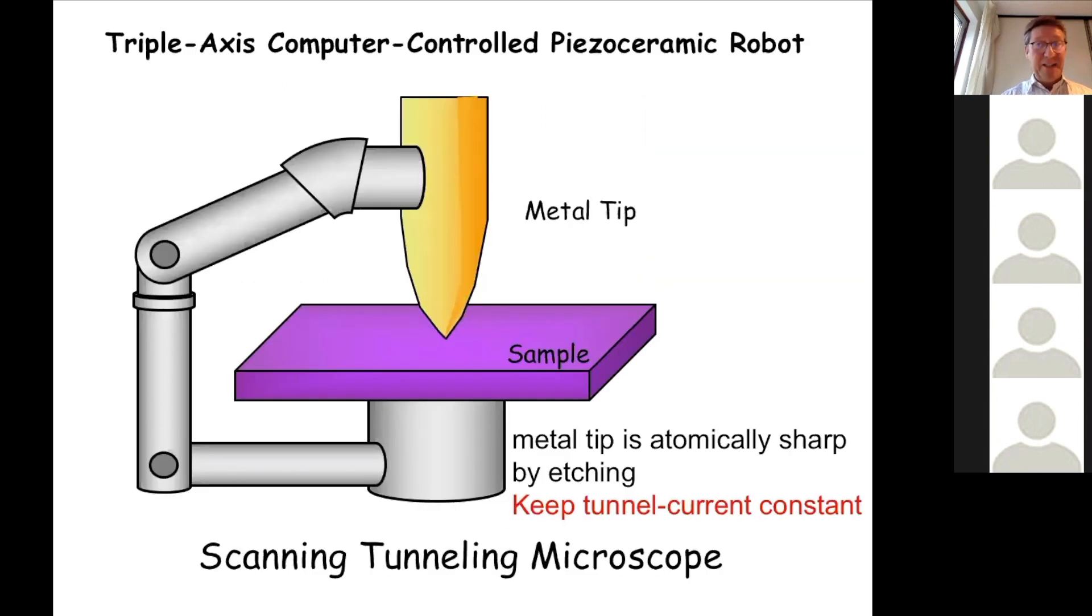This is a slide I stole from somebody from IBM. They call it a triple-axis computer-controlled piezo-ceramic robot. You see, this is the needle, it is atomically sharp. For the rest, it looks a little bit like a sewing machine, but this is what it does.